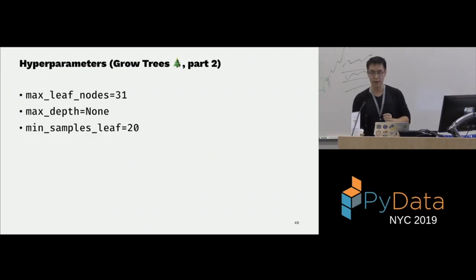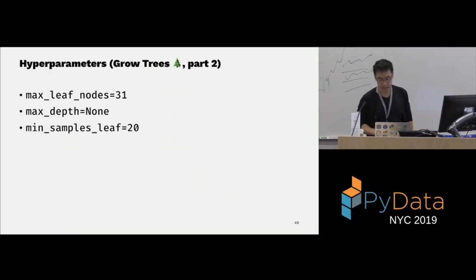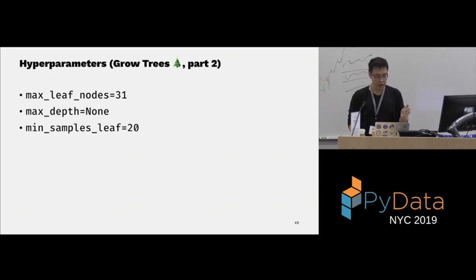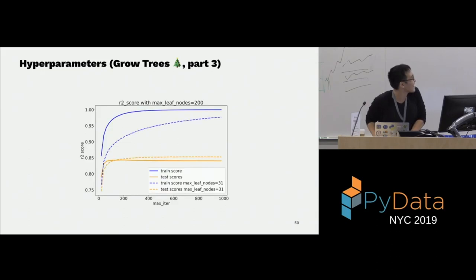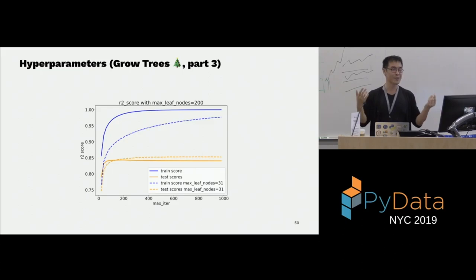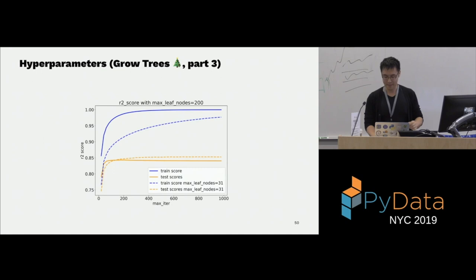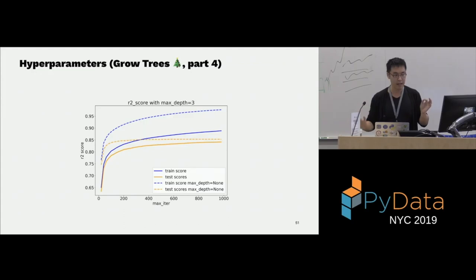For growing the trees, there are several hyperparameters. max_leaf_nodes is how many leaf nodes you have in a given tree. max_depth is set to None by default, meaning grow as much as possible given the other conditions. min_samples_leaf is how many samples end up in a given leaf — default is 20. If you set max_leaf_nodes to 200, your model will overfit. If you set max_depth to something like 3, all your trees are short and stubby, and they underfit.